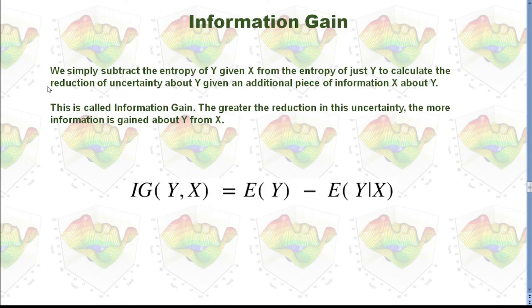So we simply subtract entropy of Y given X from the entropy of just Y to calculate the reduction of uncertainty about Y, giving an additional piece of information X about Y. The greater the reduction in this uncertainty, the more information is gained about Y from X.